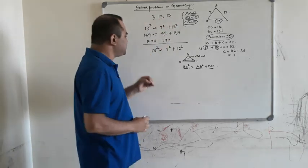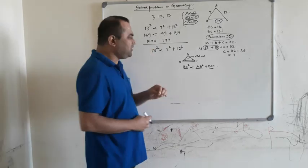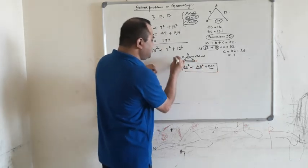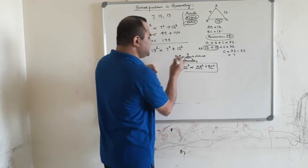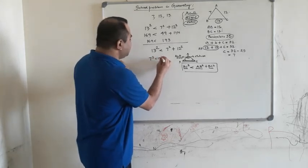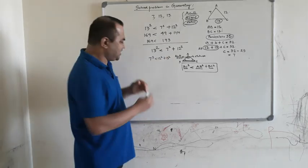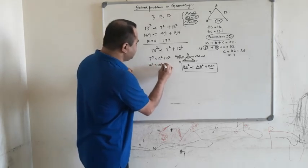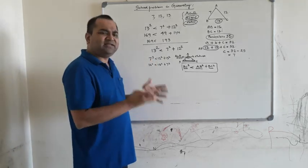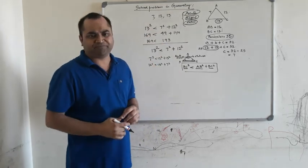In this question, 13 squared is less than 7 squared plus 12 squared, so the less-than inequality applies. The angle formed opposite BC — whose length obeys this property — is an acute angle. Obviously, 7 squared is also less than 12 squared plus 13 squared, and 12 squared is also less than 13 squared plus 7 squared. So opposite the sides of lengths 7 and 12, acute angles are also formed. All three angles are acute.